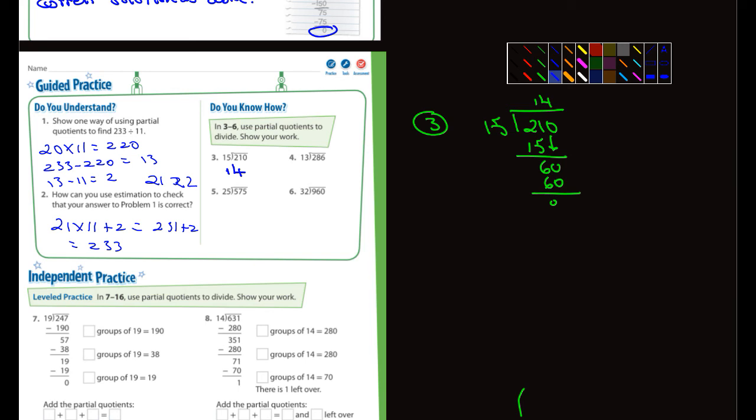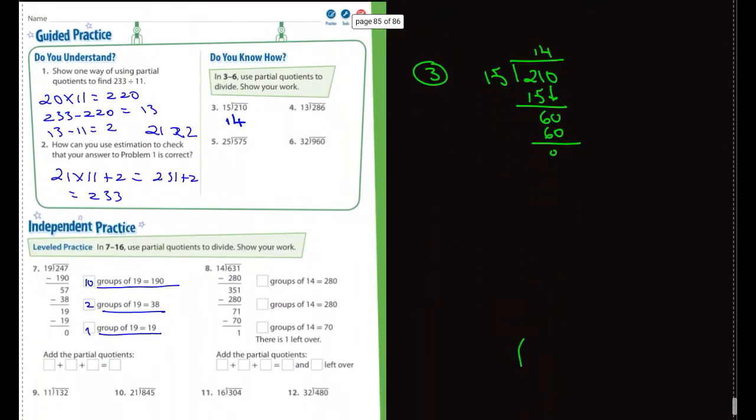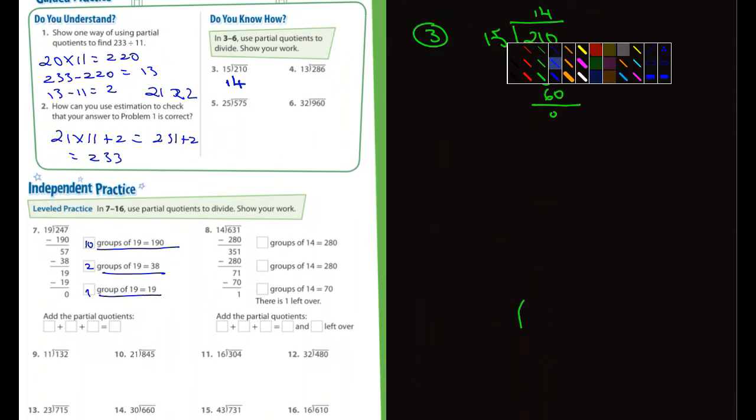You guys should know how to do these pretty well. Let's look. Let's drop down here and look at number 7. Is this still recording? I want to make sure it is because I'm tired of this thing. It stops recording on me and I don't know it. So number 7. Let's see here. It says use partial quotients to divide. Show your work. So 190. Let me, yeah. It's going to be 19. How many times does 19 go into 190? Well, that's easy. That's going to be 10 groups of 19. And then 19 goes into 38 twice. That's going to be 2 groups of 19 equals 38. And 10 groups of 19 equals 190. And how many groups of 19 equals 19? Well, that's just 1.